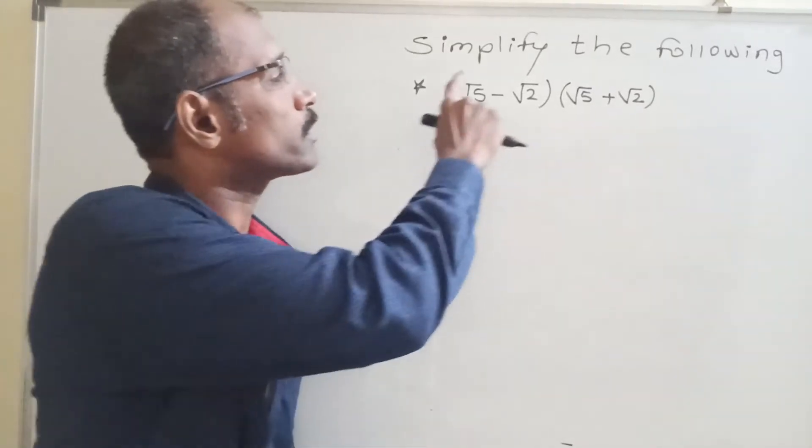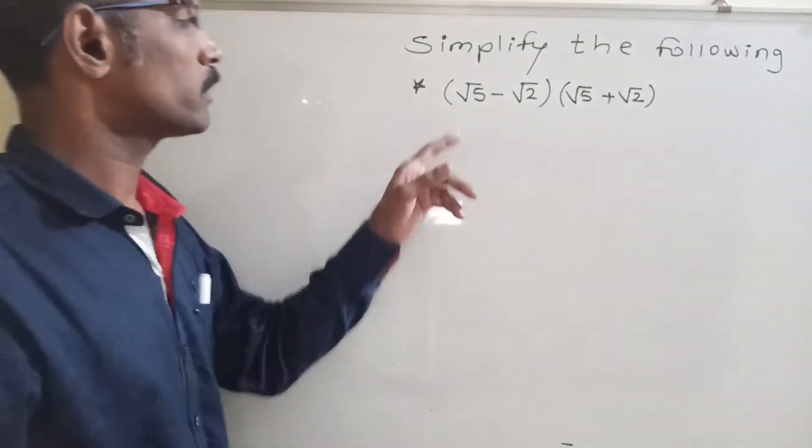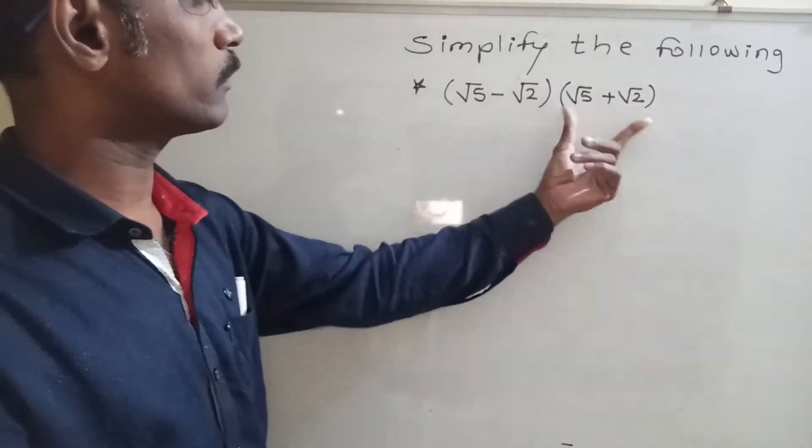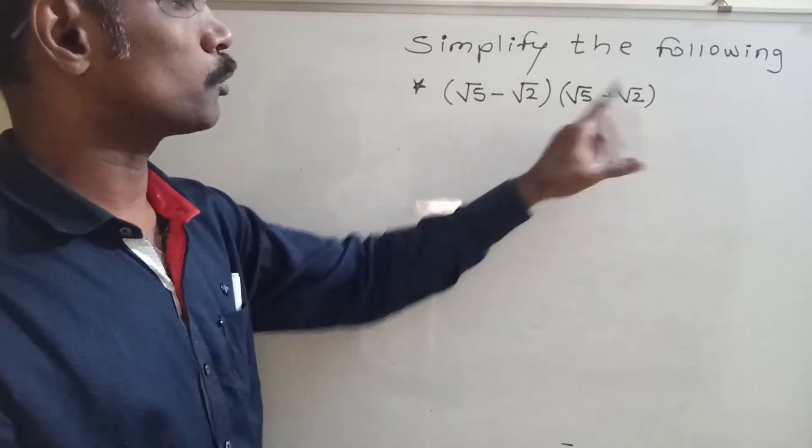Hello friends, simplify the following example: root 5 minus root 2 first bracket, second bracket root 5 plus root 2.